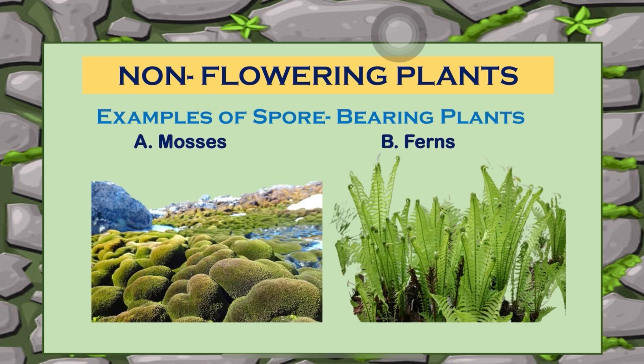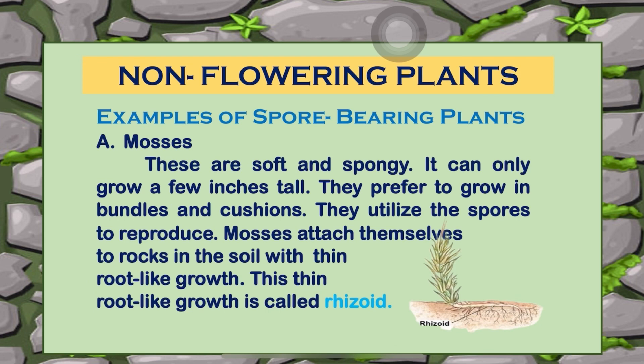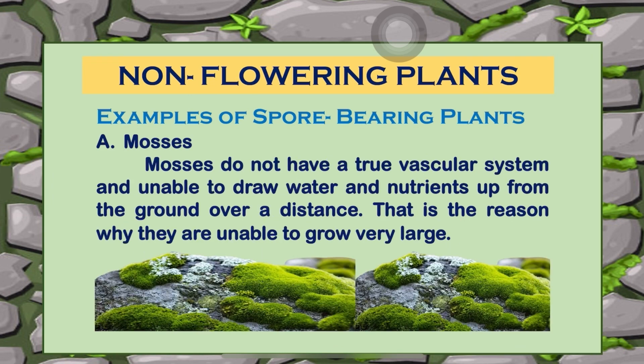Examples of spore-bearing plants are mosses and ferns. Mosses are soft and spongy and can only grow a few inches tall. They prefer to grow in bundles and cushions and utilize spores to reproduce. Mosses attach themselves to rocks and soil with thin root-like growths called rhizoids. Mosses do not have a true vascular system and are unable to draw water and nutrients up from the ground over a distance.